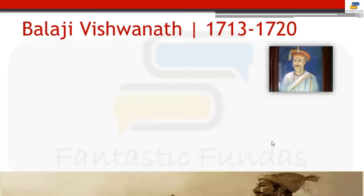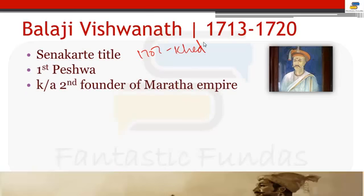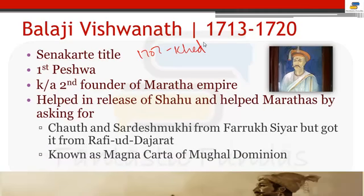The first Peshwa is Balaji Vishwanath, from 1713 to 1720. He got the title of Sena Karte in the Battle of Khed, where he helped Shahuji win against Tarabai in 1707. He is also known as the second founder of the Maratha Empire. He helped Marathas by obtaining Chauth and Sardeshmukhi rights from Farrukhsiyar — though he actually got them from Rafi-ud-Darajat, as Farrukhsiyar had only given partial rights. This is also known as the Magna Carta of the Mughal Dominion.